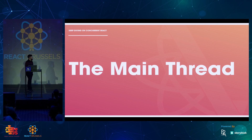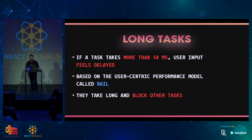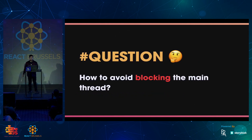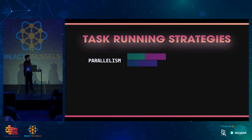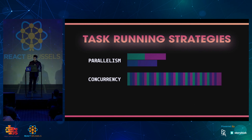Taking one step back and talking about the main thread. Long tasks are bad because they not only take long, but they also block other tasks. We can think of long tasks as anything that takes more than 50 milliseconds — and that number is based on a user-centric model called RAIL. How do we avoid blocking the main thread? We have different strategies. Let's say we have four tasks A, B, C, and D. We can go with parallelism and split them across different CPU cores, or we can go with concurrency on a single core, quickly switching between tasks. And then we get to scheduling, where a Scheduler assigns different priorities to different tasks using heuristics.